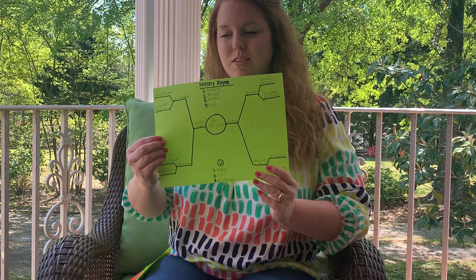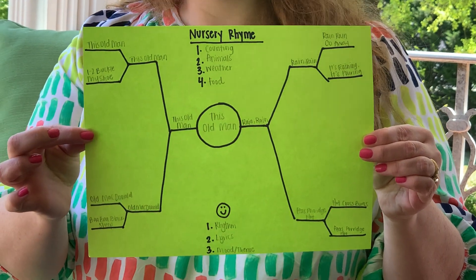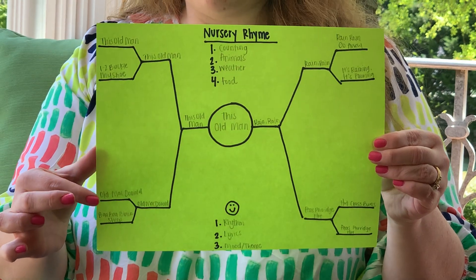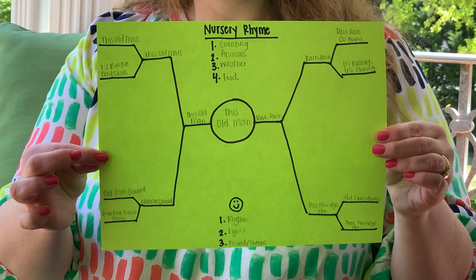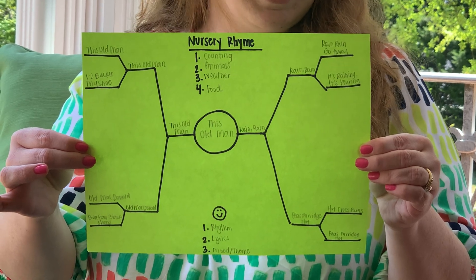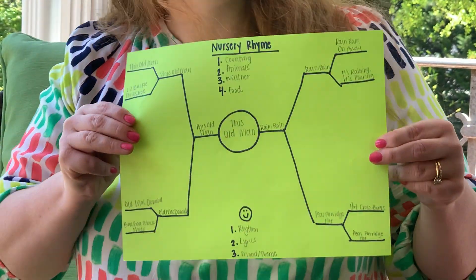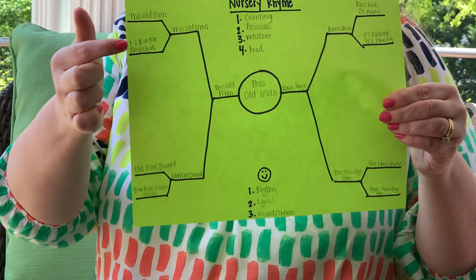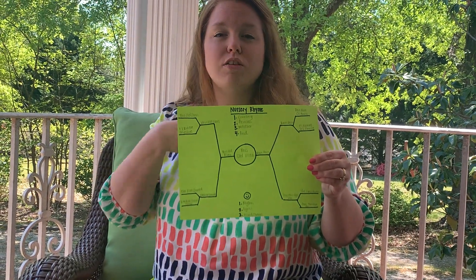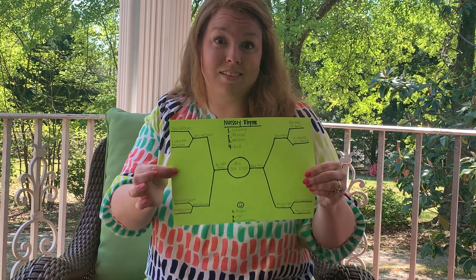Let's look closely. My first two nursery rhymes for counting were 'This Old Man' and 'One Two Buckle My Shoe.' My next category for animals is 'Old MacDonald Had a Farm' or 'Baa Baa Black Sheep.' In the third category for weather, I had 'Rain Rain Go Away' and 'It's Raining, It's Pouring.' The last category of food — oops, it's kind of windy out here — I have 'Hot Cross Buns' and 'Peas Porridge Hot.'